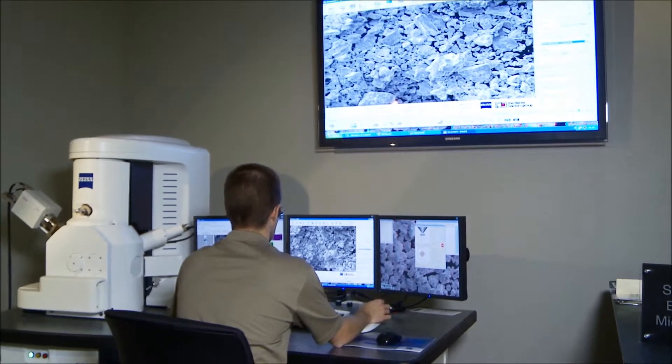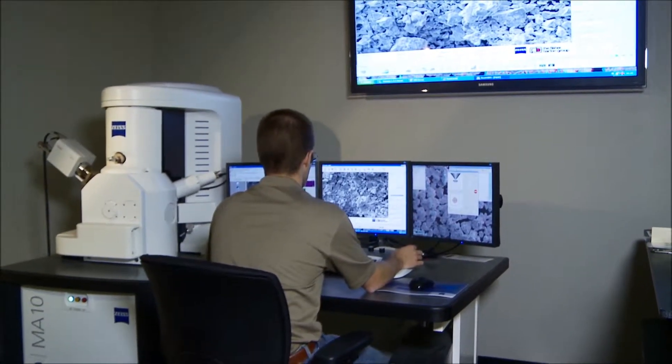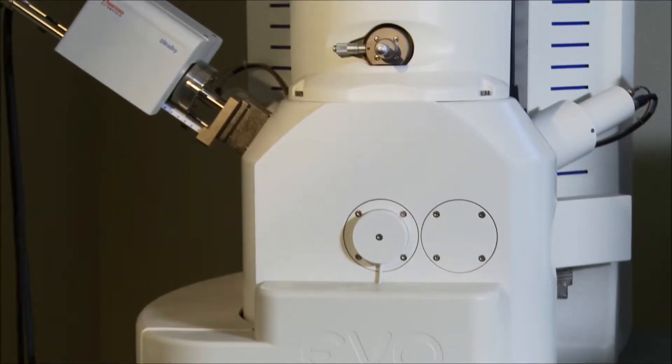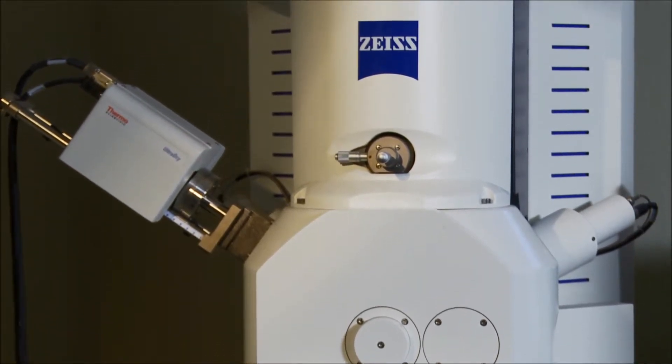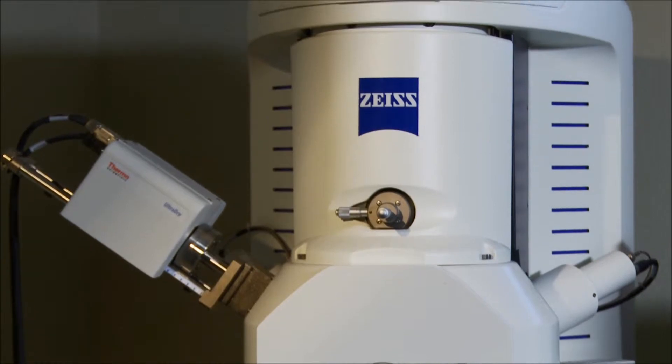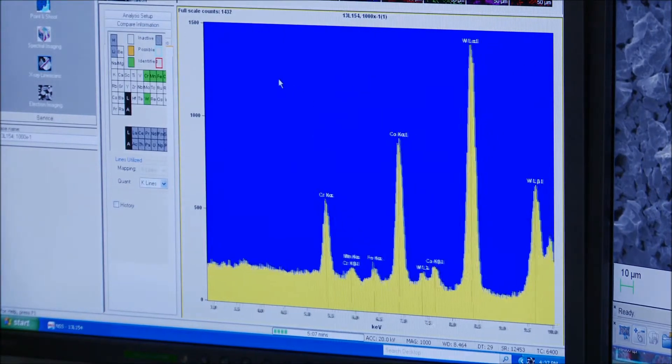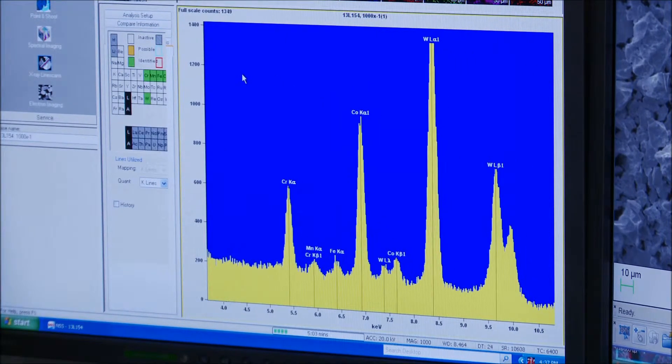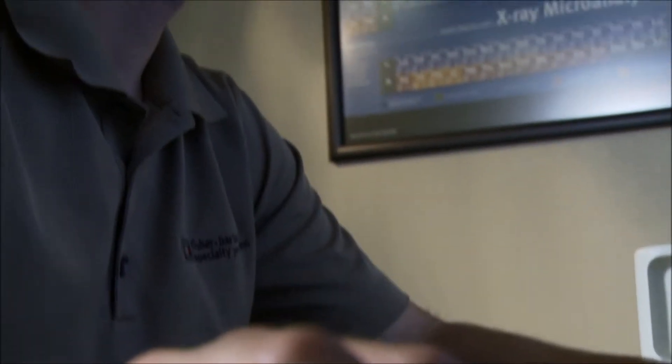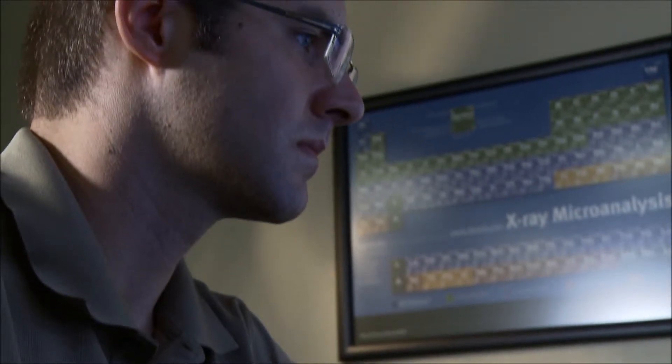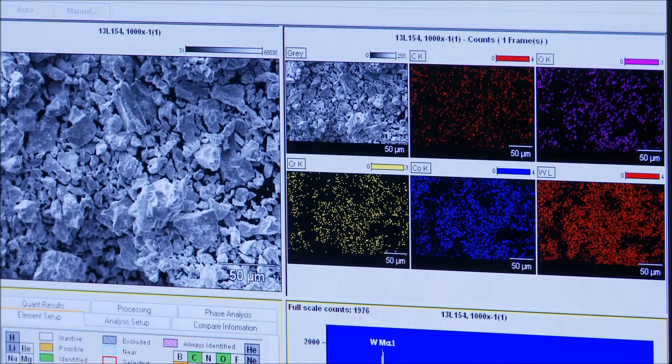One of the highlights of our microscopy lab is our Zeiss MA10 scanning electron microscope, also known as a SEM. And what this is capable of doing, this allows us to look at things that we can't see with the naked eye or with a standard white light microscope. This allows us to go up to magnifications as high as 100,000X in order to look at a fracture surface or look at a component and really observe what the microscopic features or characteristics are within that material.